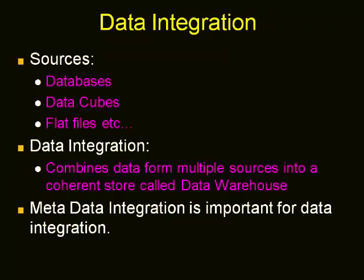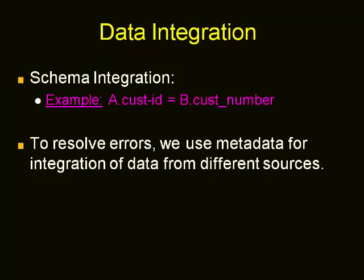While integrating the data, we first integrate the metadata, which we call schema integration. For example, there can be different names across two different sources for the same attribute — Customer ID in source A and customer number in source B. Without understanding the schema representation of the two sources, it is very difficult to integrate them. That is why schema integration is very important, and metadata is widely used to resolve errors while integrating the data.